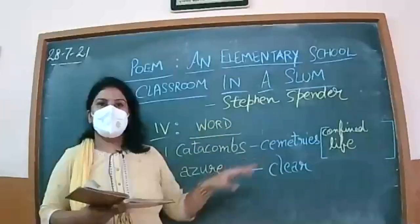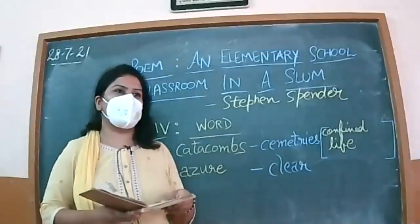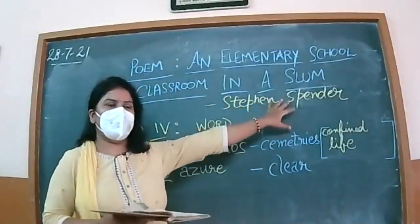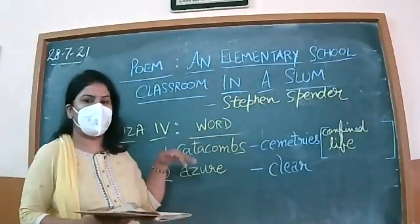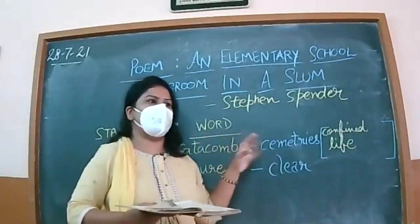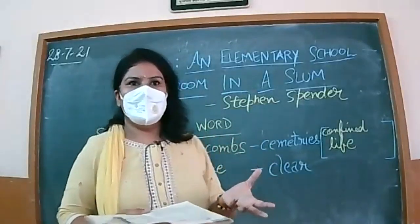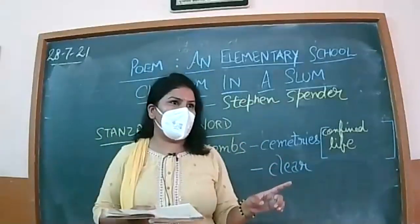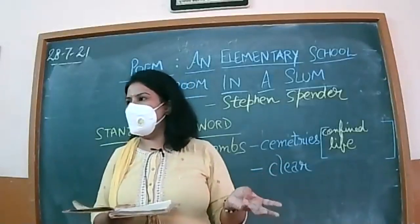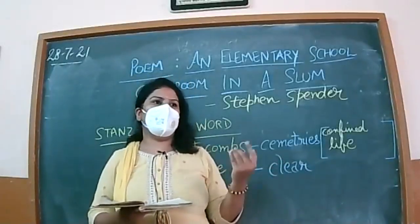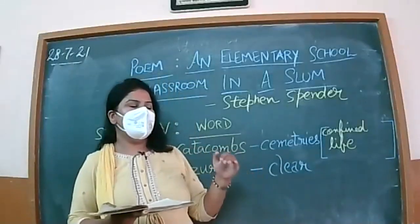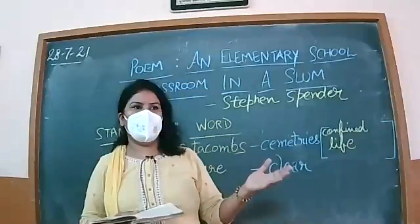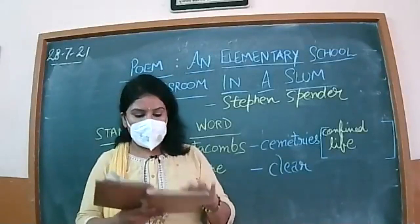In the very first stanza, Stephen Spender discusses the various children sitting in an elementary school classroom situated in a slum area where poor people live. One tall girl with her head down, another paper-seeming boy, very thin — they are not getting proper food or basic amenities of life. Hunger can be seen in their eyes. Various children are categorized by their poor background.